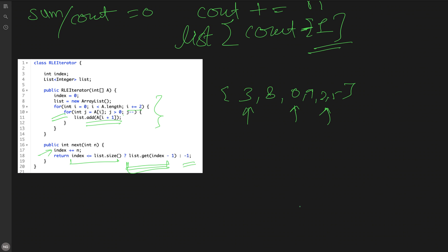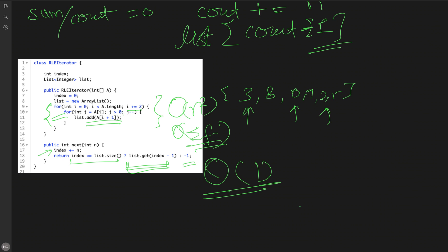Let's analyze the complexity. We have two nested for loops in the constructor, so the initial setup takes O(n²) time, and space complexity is the sum of all frequencies. The next method call is O(1). This approach can be optimized by improving constructor time complexity while sacrificing some next method performance.